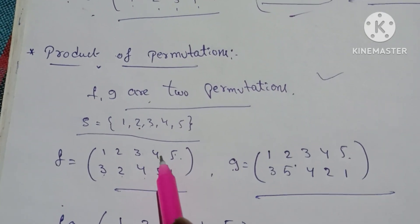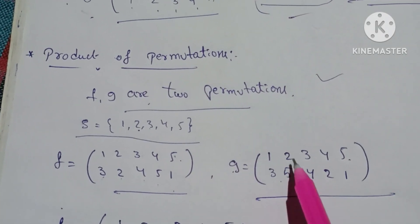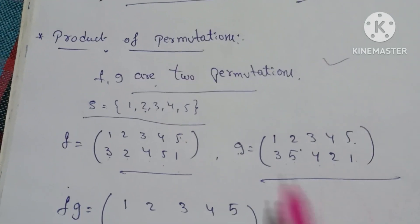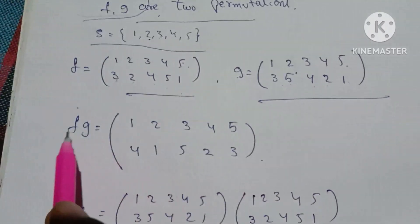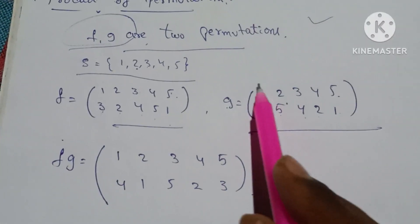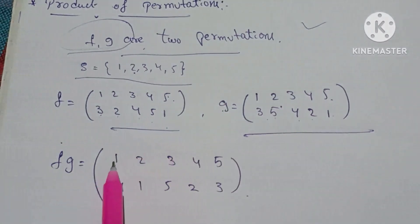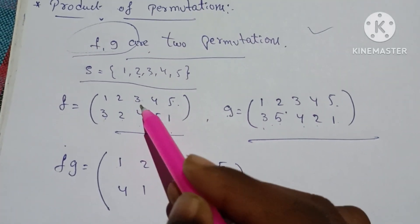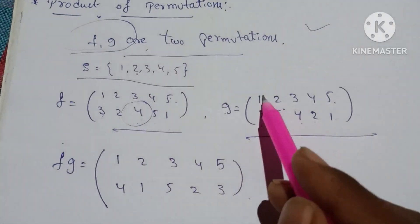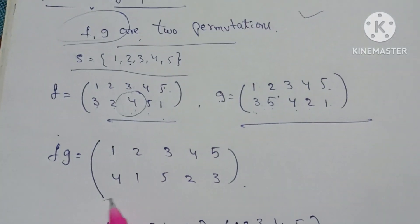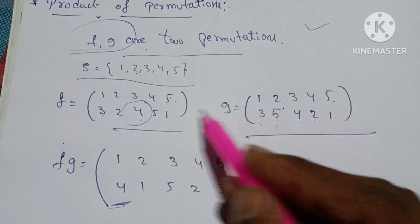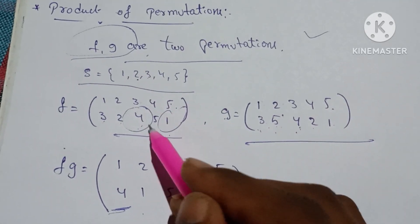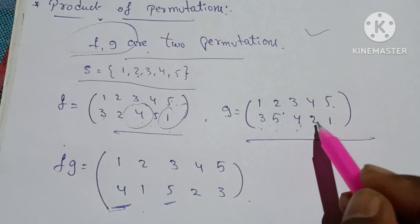F is equal. These elements are the same: 1, 2, 3, 4, 5. Here, 1 is related to 3. Here, 3 is related to 4. So 1 maps to 4. Then 2 is related to 5; 5 is related to 1. Next, 3 is related to 4; here 4 is related to 5. So 4 is related to 5, and 4 is related to 2, so 2 maps to 2.